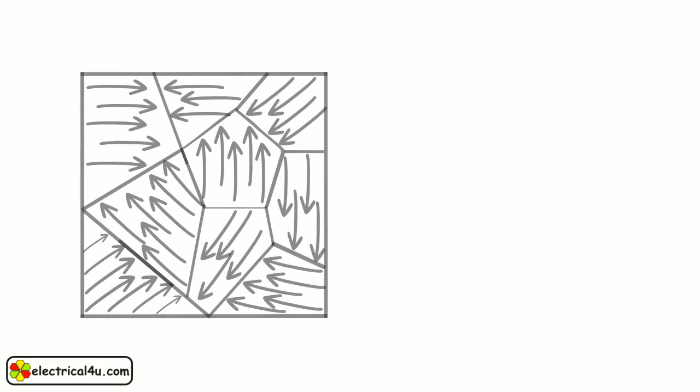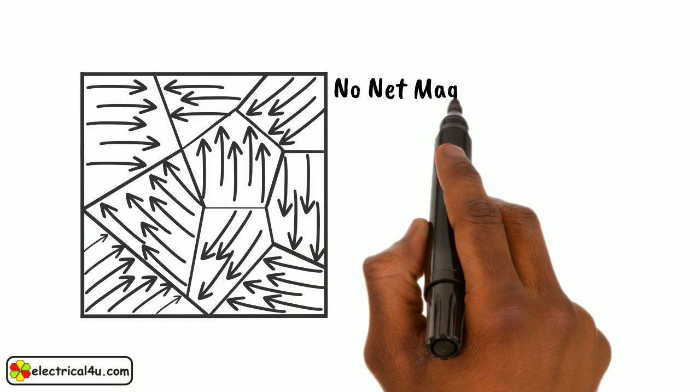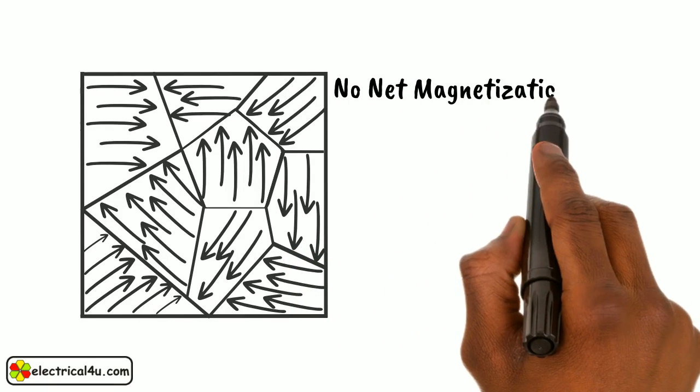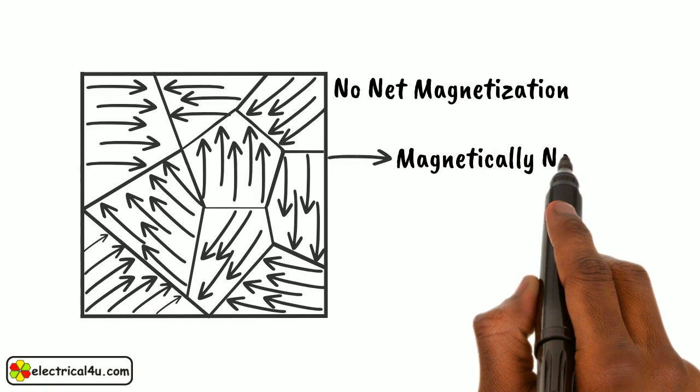These domains are randomly oriented in a piece of iron, so there will be no net magnetization in the iron. The iron piece can be considered as magnetically neutral.